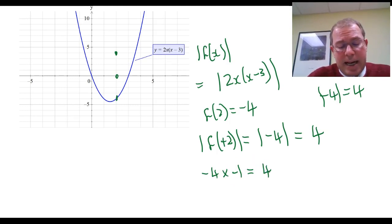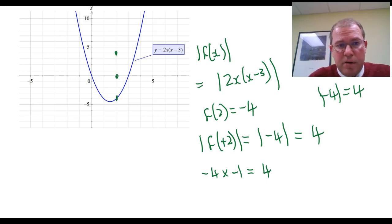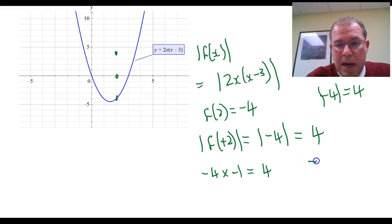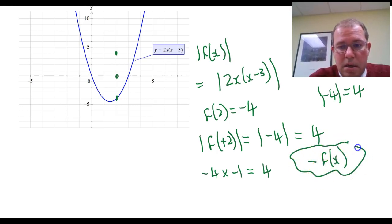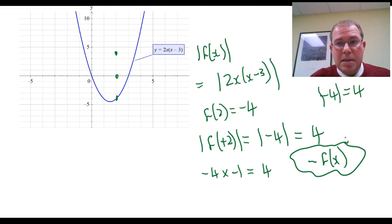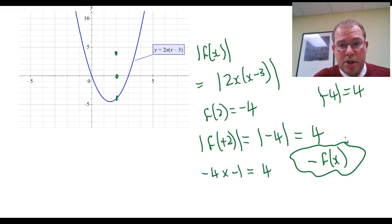This is helpful because we know that a reflection about the x-axis can be written as minus f of x, and that will help us write this as a piecewise function.